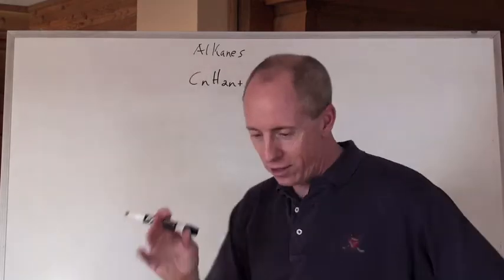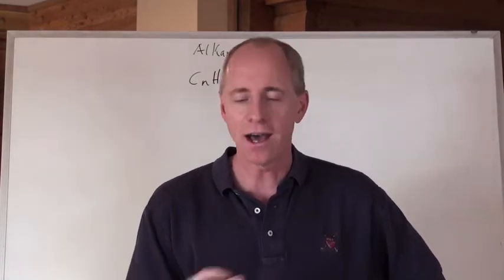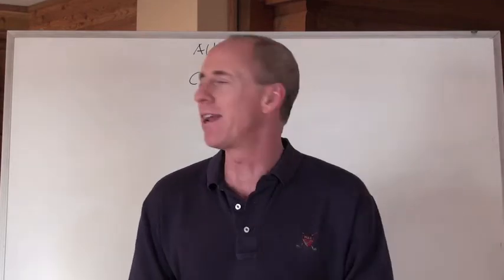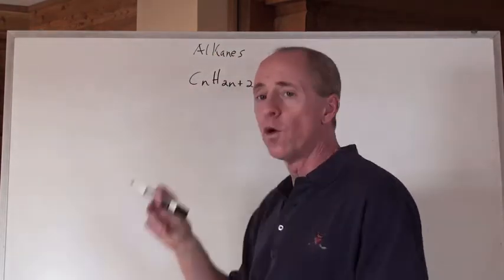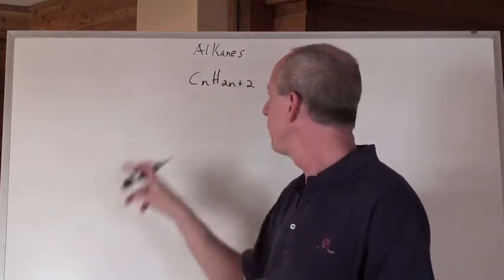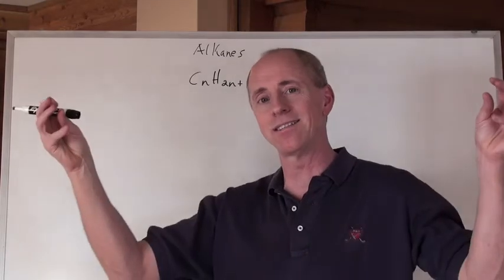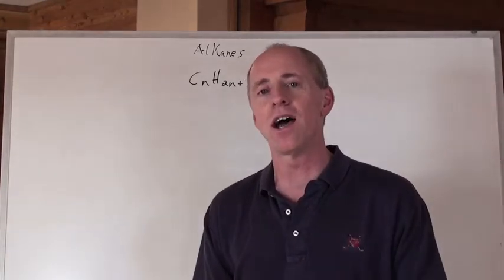We start with something called alkanes. Alkanes, again, single-bonded chained hydrocarbons. How do we name those types of chemicals? The general formula for alkanes is CNH2N plus 2. Whatever number of carbons you have, you have twice as many hydrogens and then two more. That kind of seals up the ends on either side of the hydrocarbon.